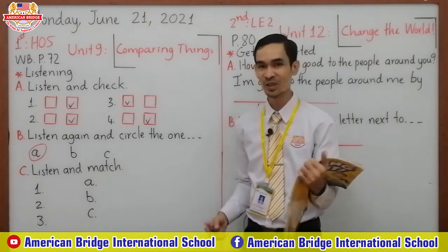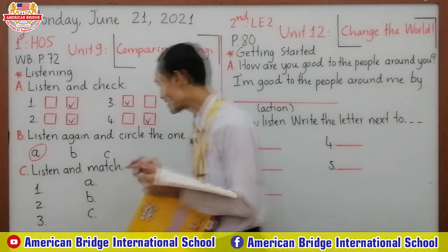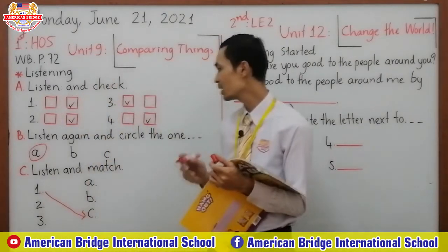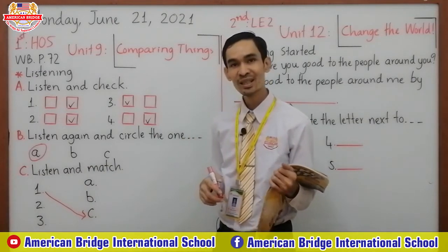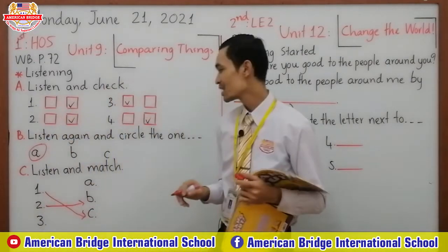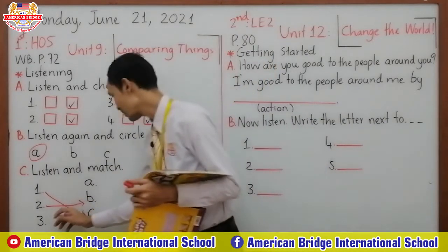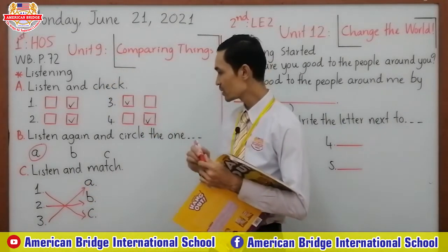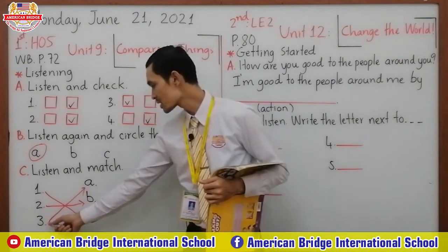So now let's check the answer all together. Number one: match to letter C, right? Number one matches to letter C. How about number two? Match to letter B, right? Number two matches to letter B. So the last one — it must be letter A. Number three matches to letter A. You can check your answer again: one matches to C, two to B, and three to A.